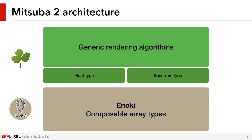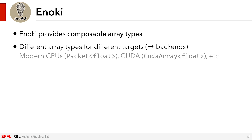So let's start with Mitsuba 2's architecture. In essence, Mitsuba 2 is a generic renderer parameterized by two types: one to represent floating point quantities, and the other to represent colors. By changing these underlying float and spectrum types, we are able to retarget the entire renderer. The second important ingredient is Enoki, which is a new TensorMath library. It offers a collection of array types which encapsulate all of the target-specific details. Enoki provides an array type for each target, such as vectorized CPU or CUDA. They all conform to the same interface, so they can be manipulated interchangeably.